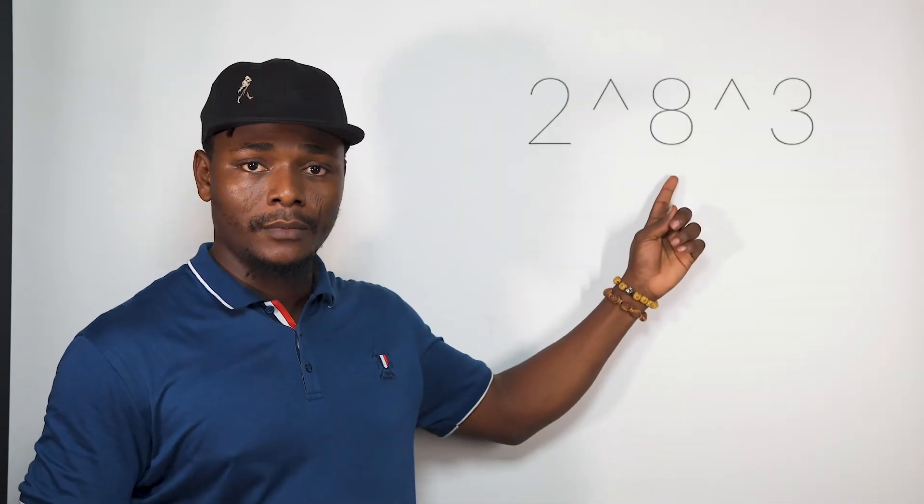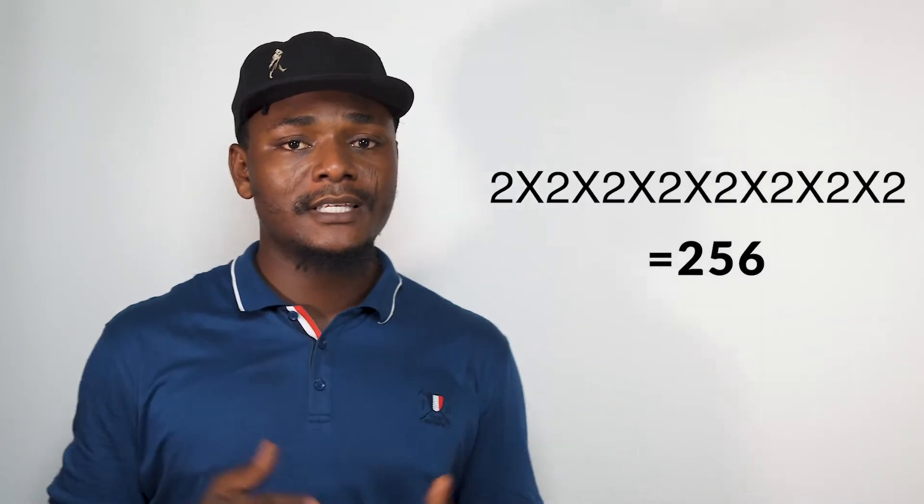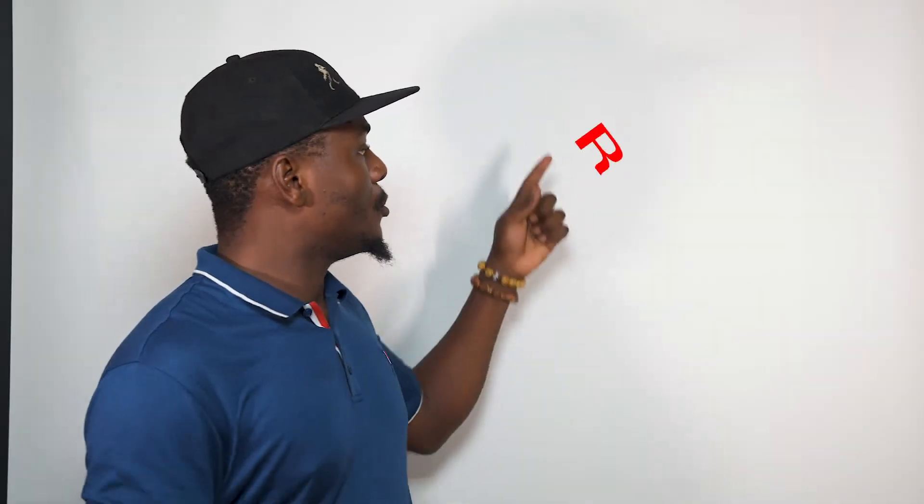In digital photography, 0 is assigned to black and 1 is assigned to white. A 1-bit image comprises 2 colors, which is black and white. An 8-bit is calculated as 2 to the exponent 8, which simply means that when you multiply 2 by 2 in 8 places, you're going to get 256 possible colors for your red, green, and blue channel.